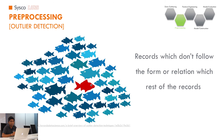Another thing we do in preprocessing is outlier detection. In most machine learning problems, we try to represent the general population, and datasets will have outliers — exceptional data points. In most machine learning problems we remove these outliers. However, in some cases like anomaly detection, we actually need to keep them. Depending on your machine learning problem, you need to decide whether outliers should be removed or retained.